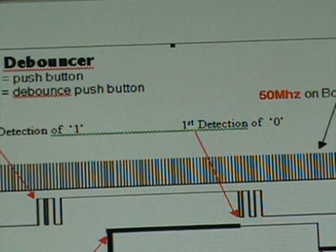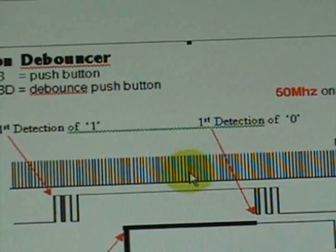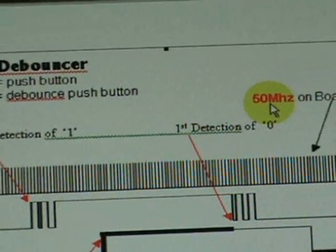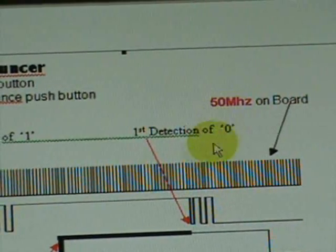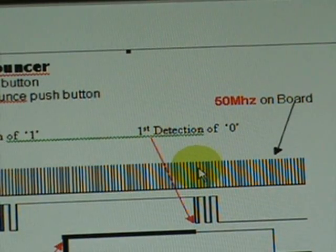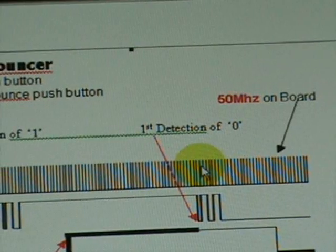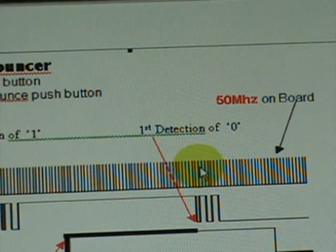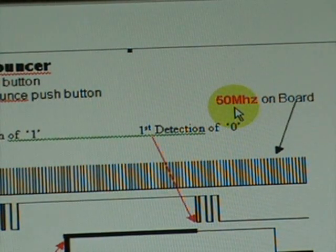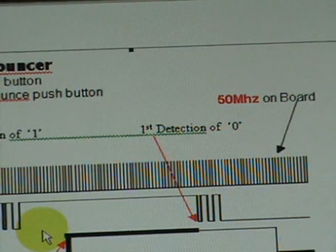So what we are going to do is slow down our 50 megahertz by 500,000 to produce a 100 hertz. We will use that 100 hertz and clock the four-bit shift register.